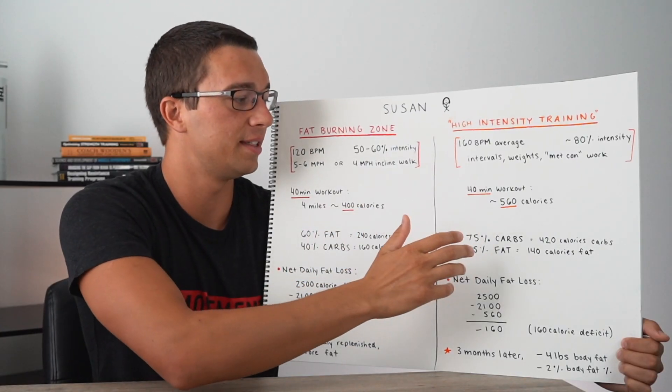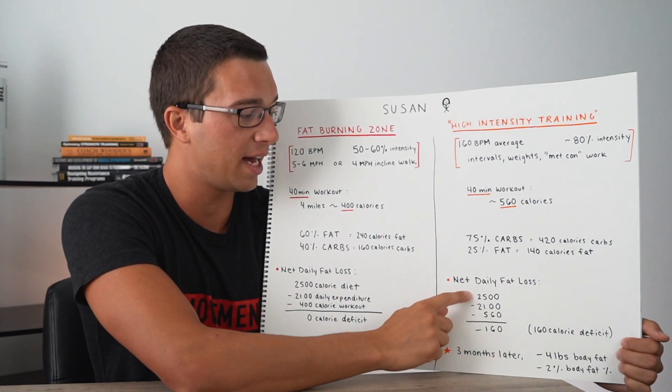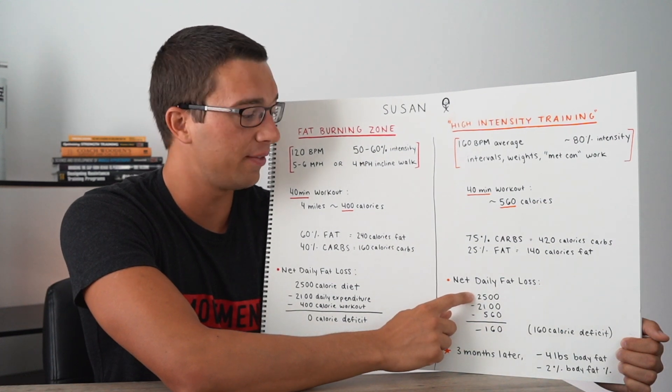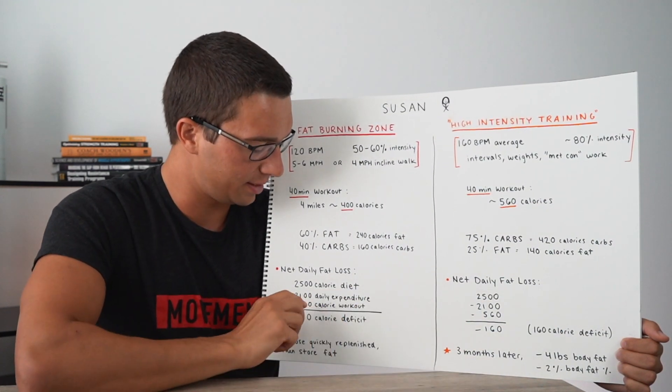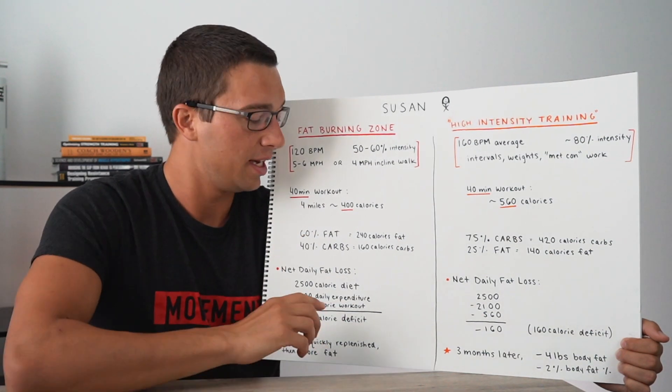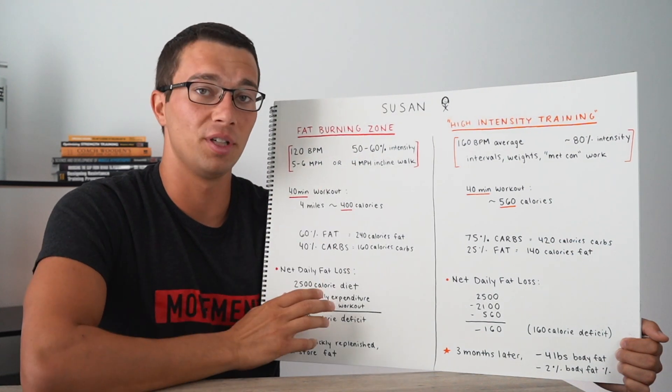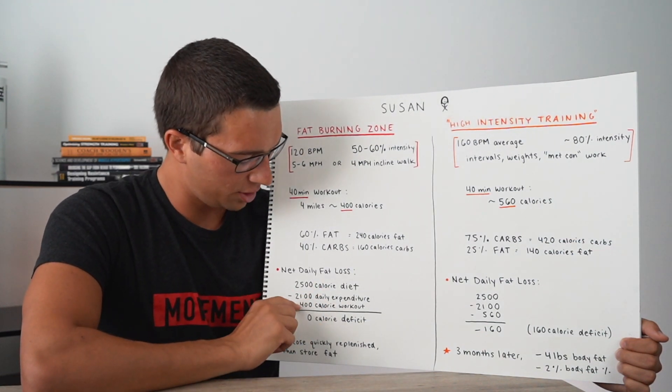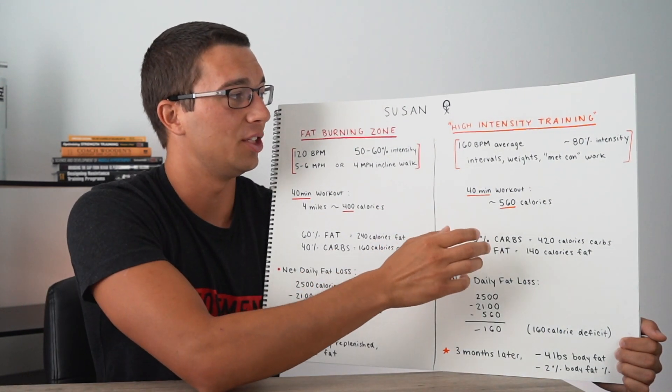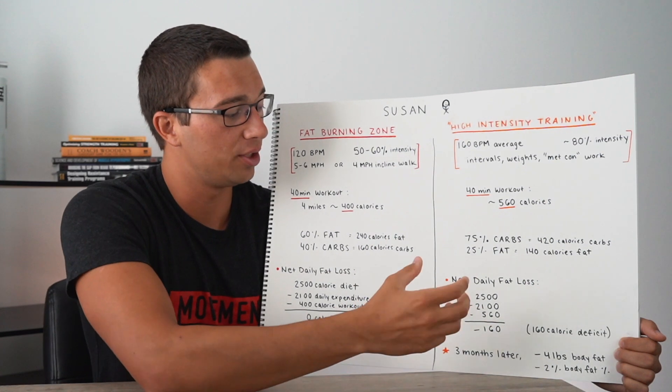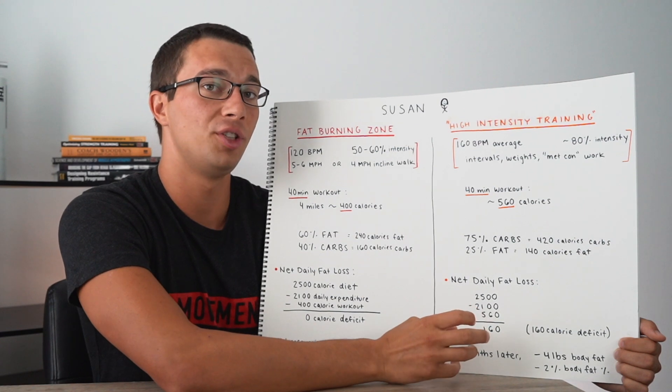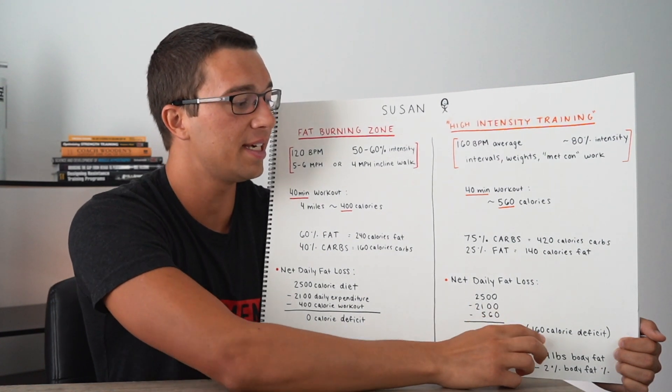So let's assume in both cases that Susan is abiding by a 2,500 calorie daily diet. So her diet consists of 2,500 calories. Her expenditure in both cases, just from daily expenditure, so walking, daily activities, is 2,100 calories. In the fat burning zone workout, she also burned 400 calories from exercise to get a total of zero calorie deficit. Whereas on the higher intensity training side, because she had a greater number of calories burned total, she actually burned 160 calories more than she consumed and got to 160 calorie deficit.